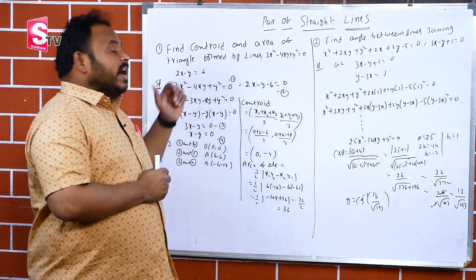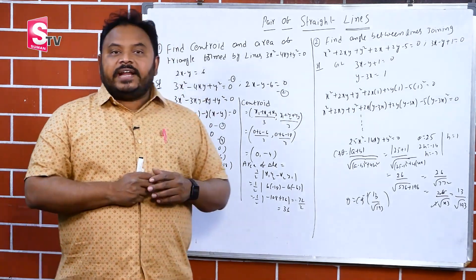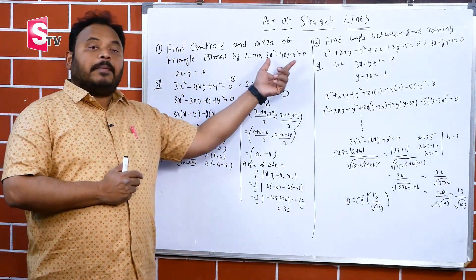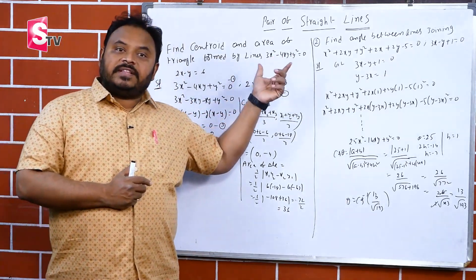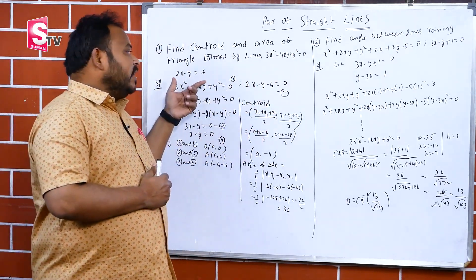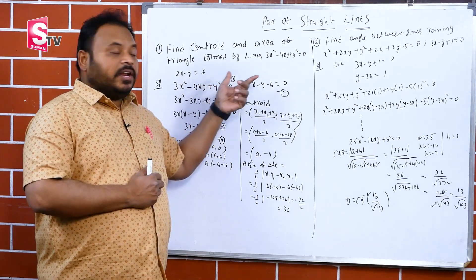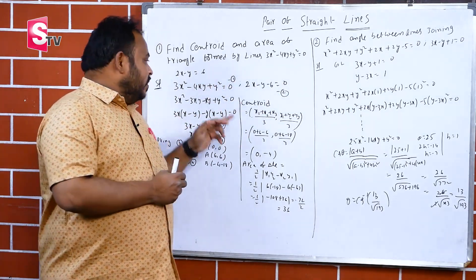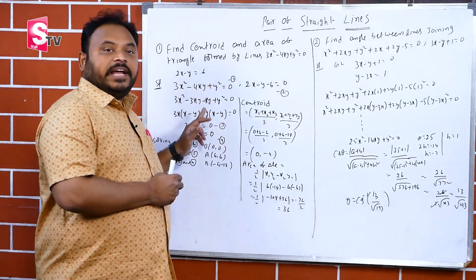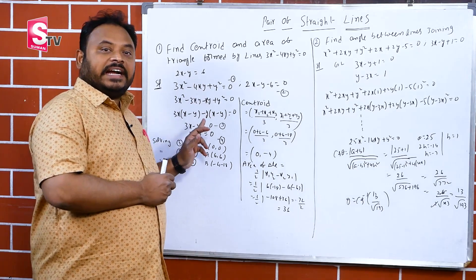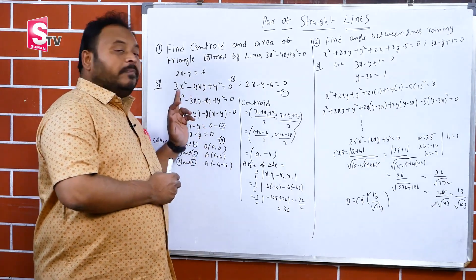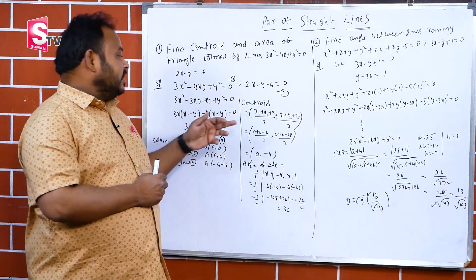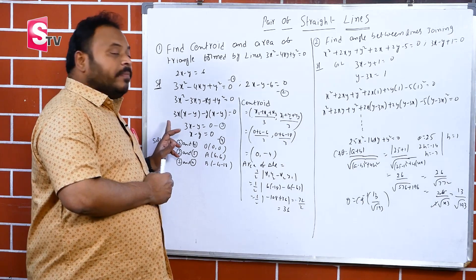To summarize: we found the centroid and area of the triangle formed by the combined equation 3x²−4xy+y²=0 and the line 2x−y=6. We converted the combined equation into two lines by splitting the middle term: −4xy becomes −3xy and −xy as factors.